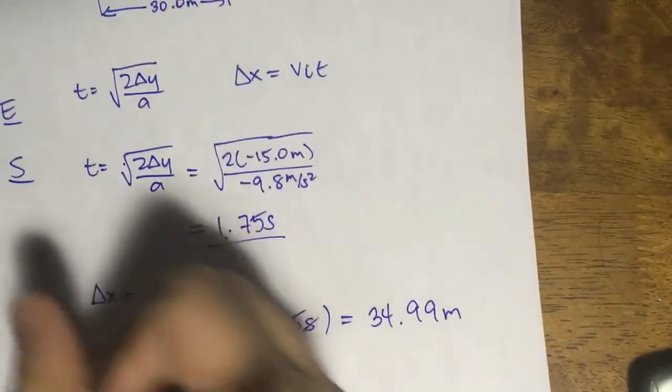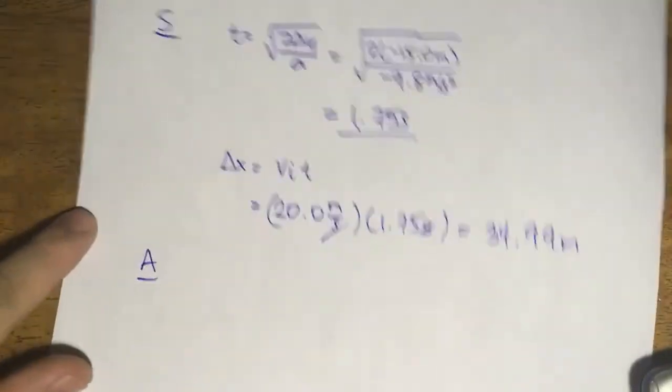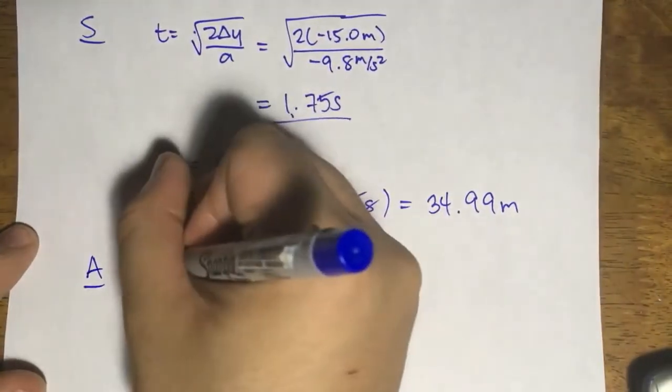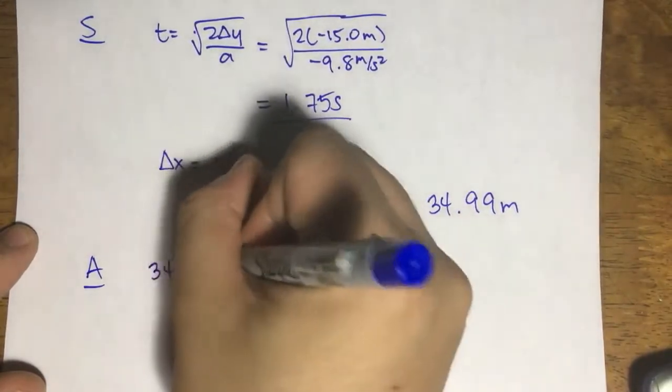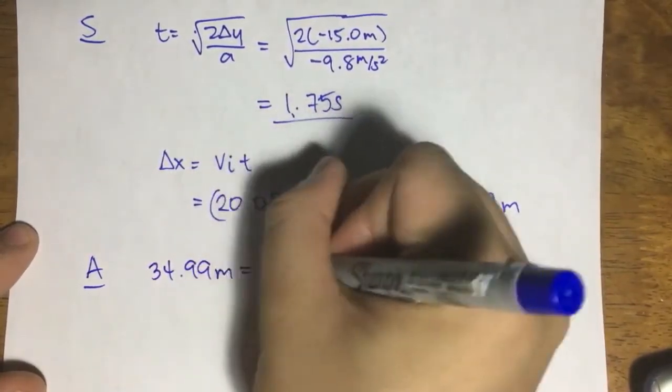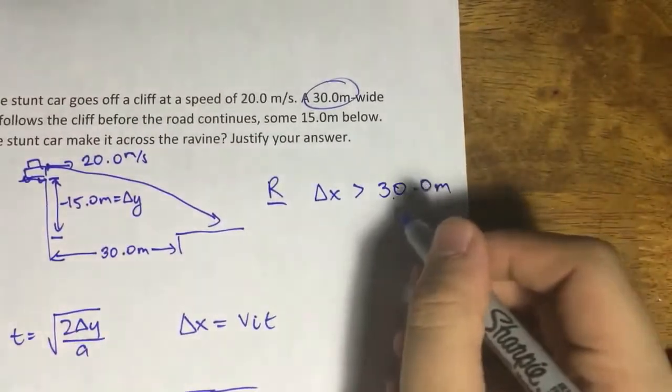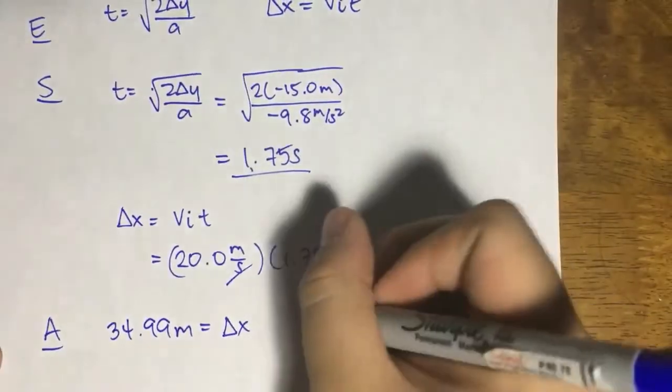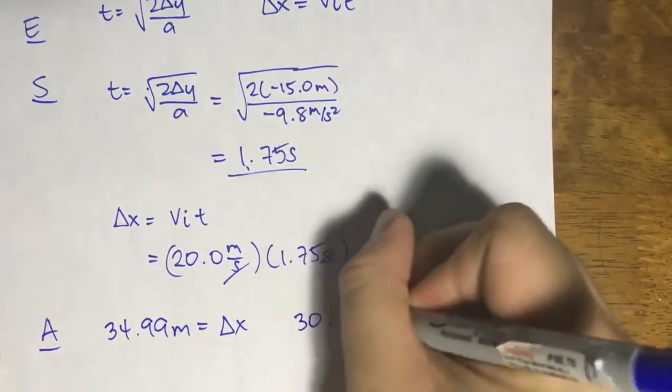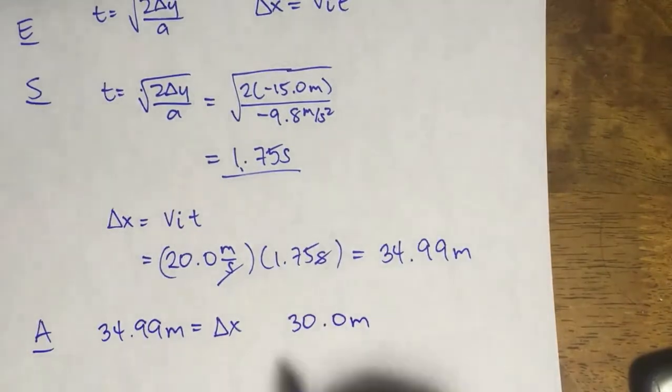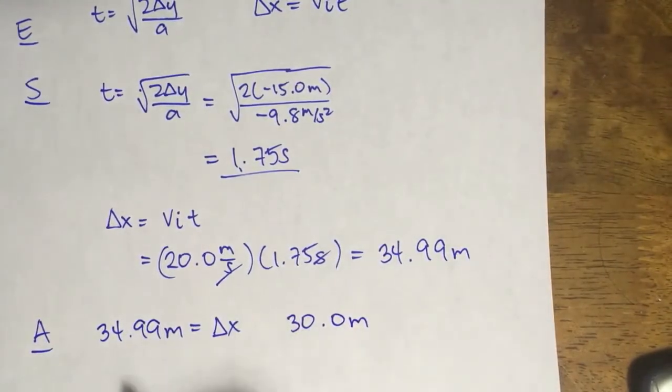So what's the answer? Well, in the answer, 34.99 meters is your delta x. And we have to compare it with 30.